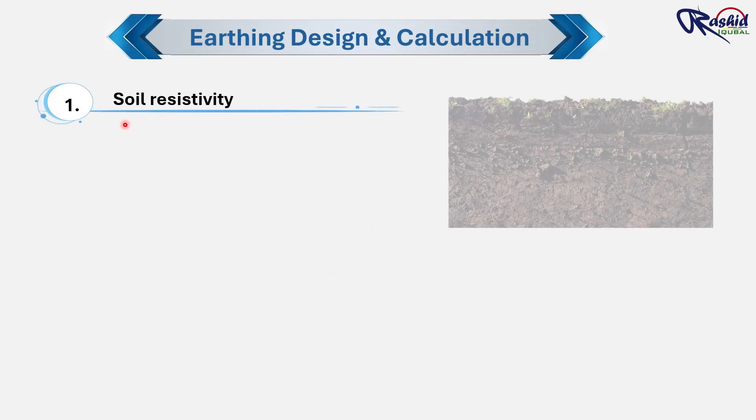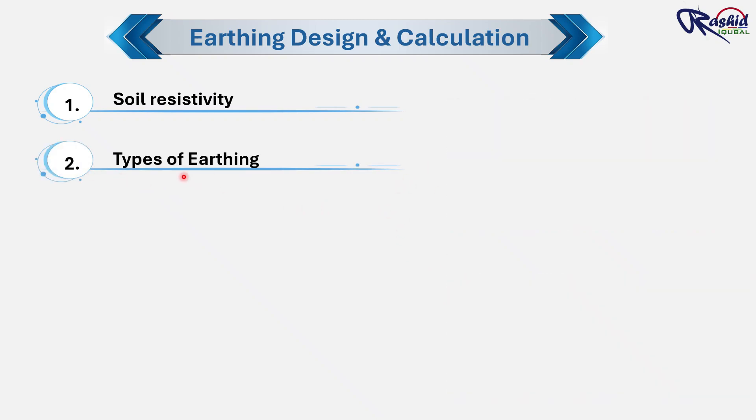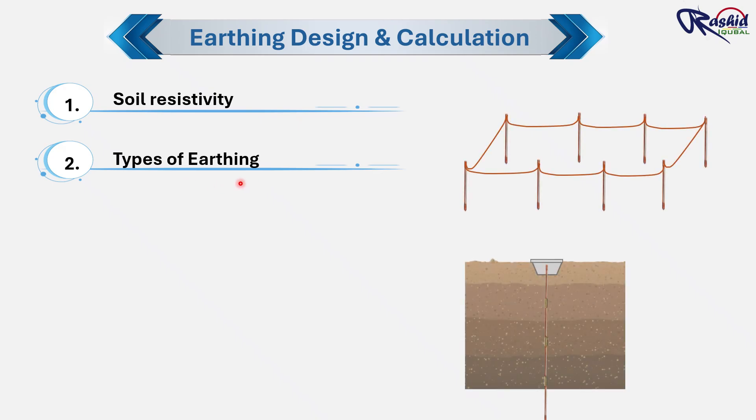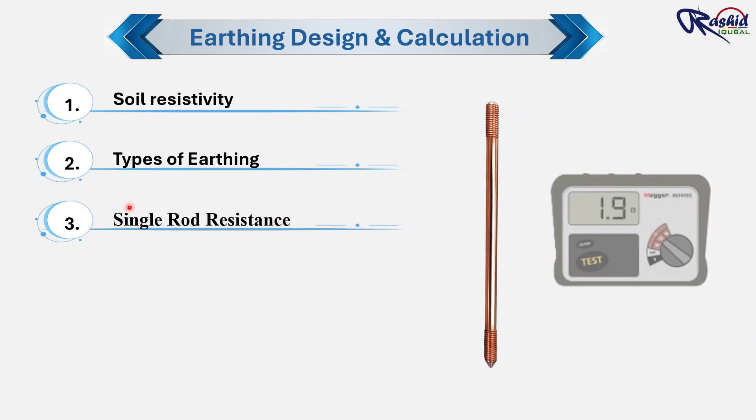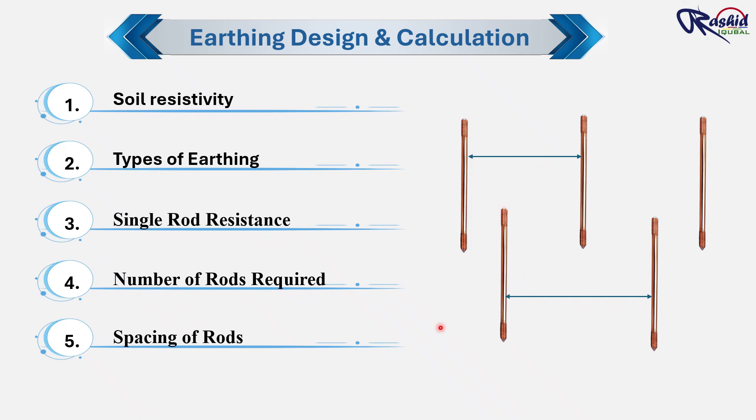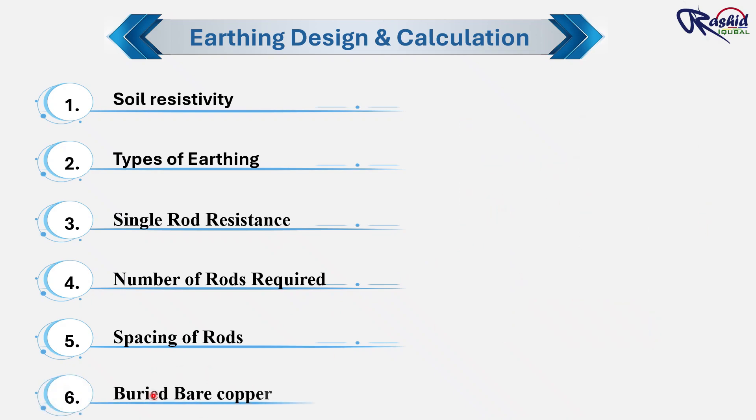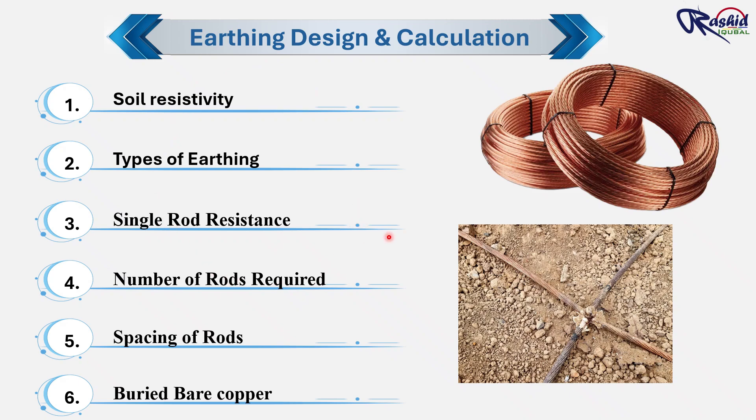We will begin by learning how to perform a soil resistivity test, which is the most critical step in earthing design. Next we will understand the different types of earthing systems used in commercial and high-rise buildings. After that, we will go through how to calculate the resistance of a single earth rod, and then learn how to determine the required number of rods needed to achieve the target resistance. We will also discuss the minimum distance that must be maintained between rods. And finally, we will learn how to calculate the proper size of earthing cable. So don't skip any part of this video. Watch till the end to make sure your concepts about earthing are completely clear.